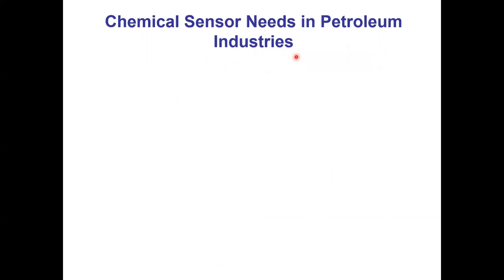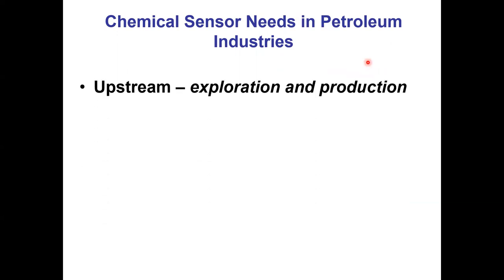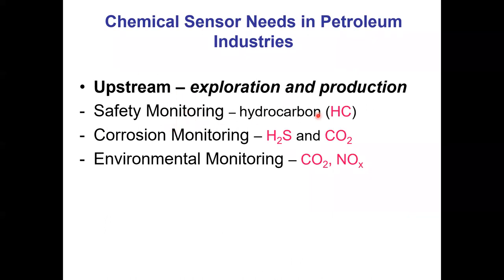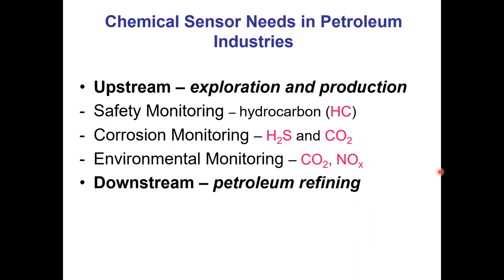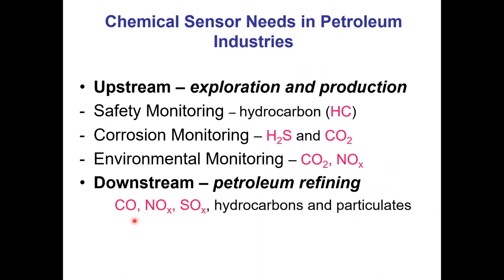There are needs for chemical sensors in petroleum industries — both upstream, where exploration and production are done (safety monitoring mostly uses hydrocarbon sensors; corrosion monitoring looks for hydrogen sulfide and CO2; environmental monitoring looks for CO2 and NOx), and downstream, where petroleum refining happens. There, you're looking for flue gases including CO, NOx, hydrocarbons, and particulate matter. For particulate matter, there are very accurate optical detection methods available.